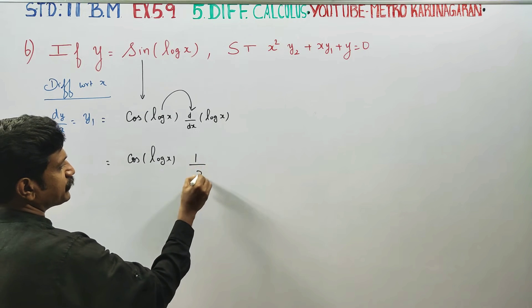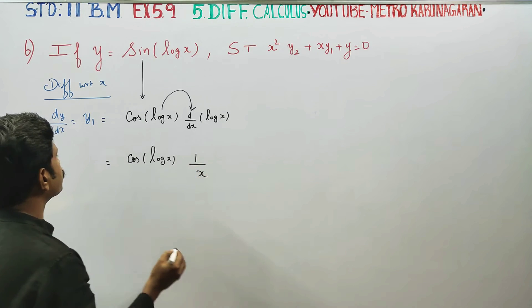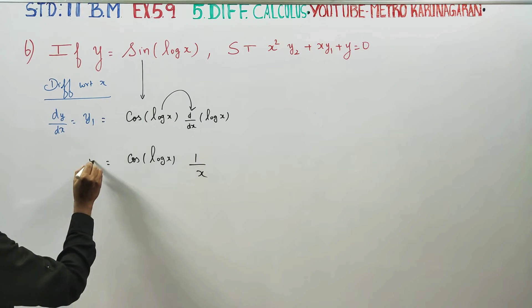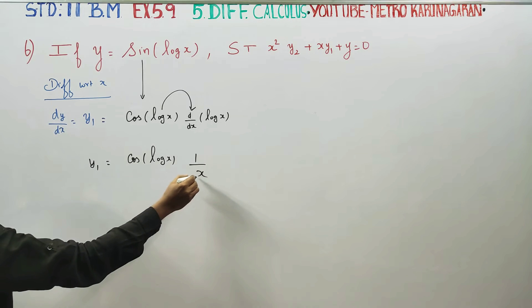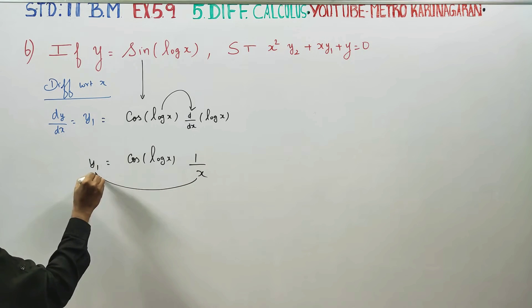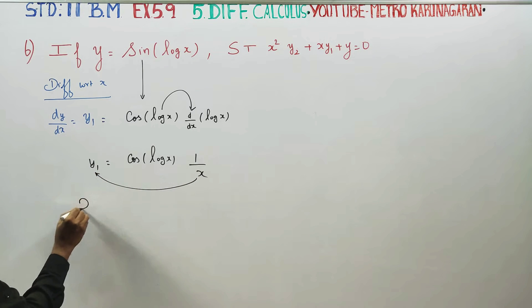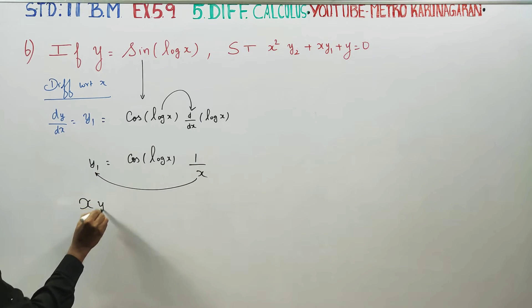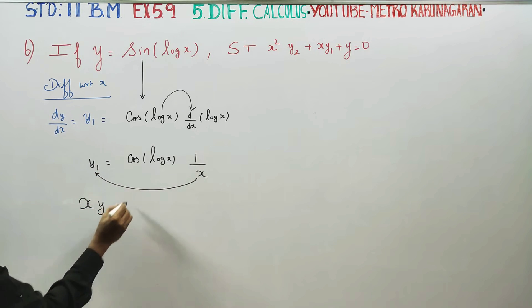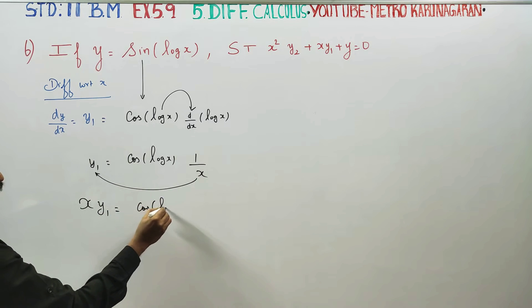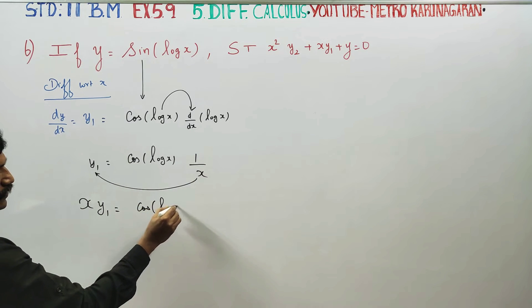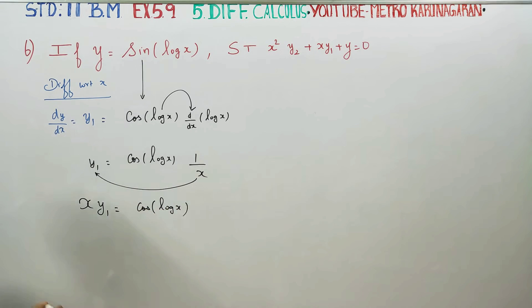The derivative of log is 1/x. So y1 is equal to cos(log x) times 1/x. Cross-multiplying, xy1 is equal to cos(log x).